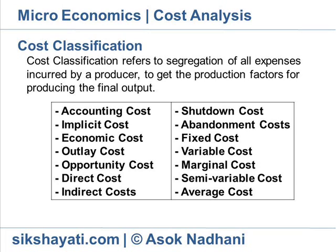Outlay cost implies the actual outlay or expenditure incurred by a firm on production of a commodity. It includes expenditure on wages and salaries, machinery and equipment, materials, power, fuel, transportation, rent, insurance, taxes, etc.